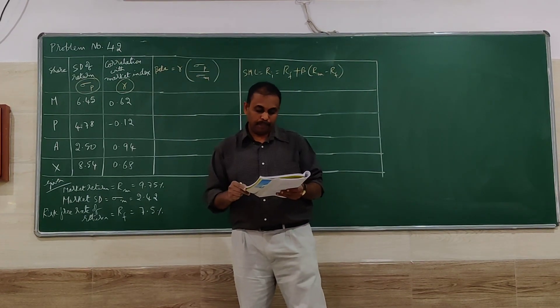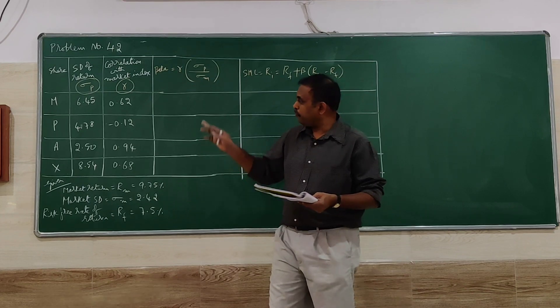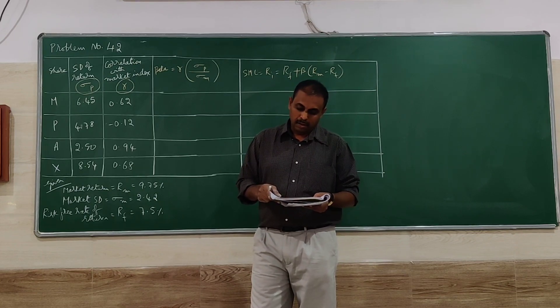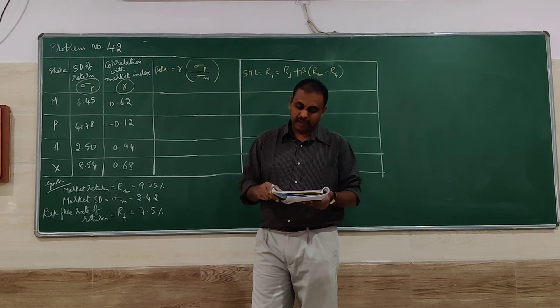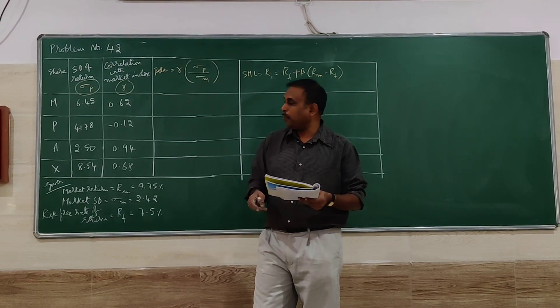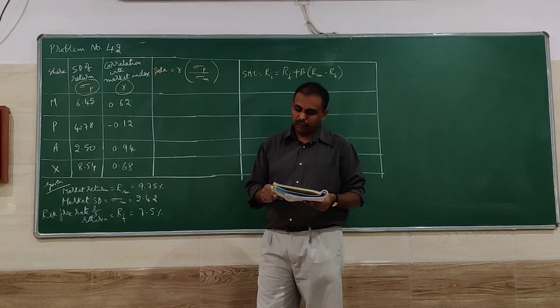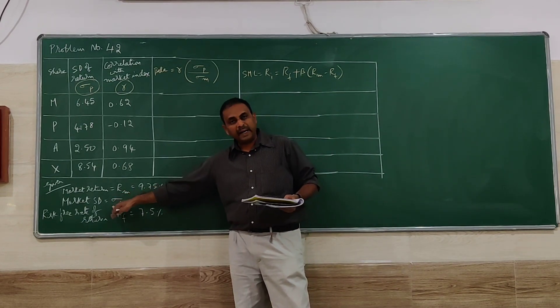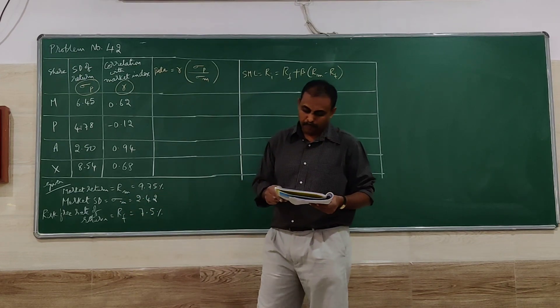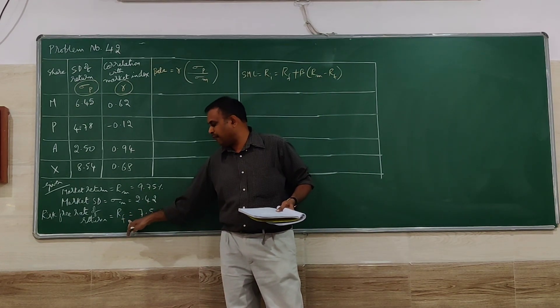Hello, Number 42. The following details are available regarding four shares M, P, A, X. Calculate beta coefficient and expected rate of return from each share if overall market return is 9.75%, with SD of 2.42. The risk-free rate of return is 7.5%.